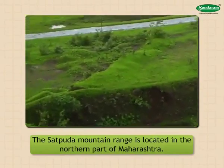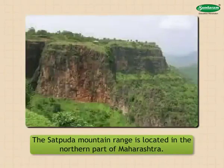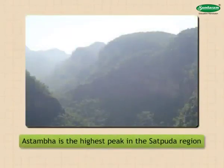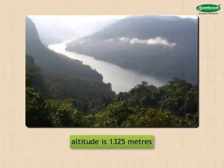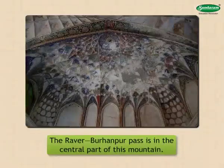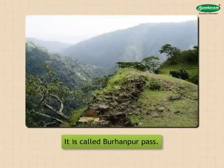The Satpura mountain range is located in the northern part of Maharashtra. The western part of this range is in the Nandurbar district, which includes high altitude regions like the Toranmal plateau and Asthamba peak. The Asthamba is the highest peak in the Satpura region, with an altitude of 1325 meters. The Raver-Burhanpur pass is in the central part of this mountain. To the east is the Gavilgard range, extending into Amravati and Akola districts.